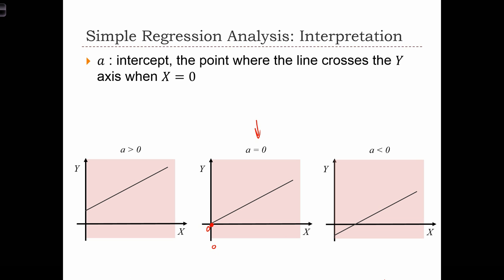If a is greater than 0, then the regression line is going to pass through the y-axis above at a point that's greater than 0. And if a is less than 0, then the regression line is going to pass through the y-axis at a negative value.